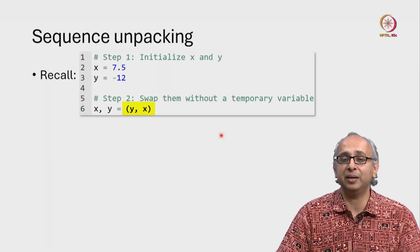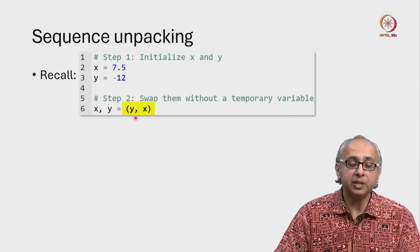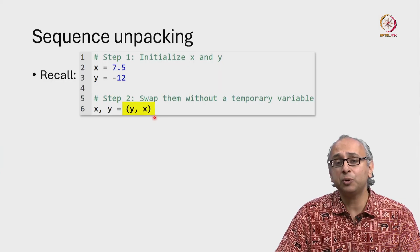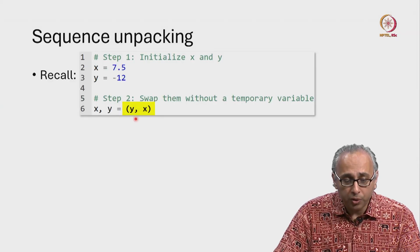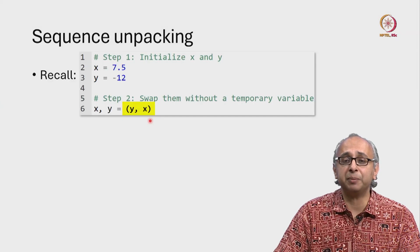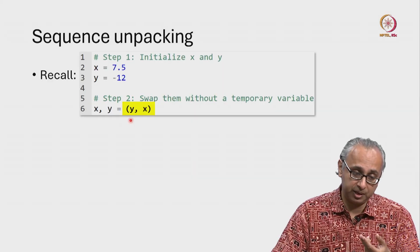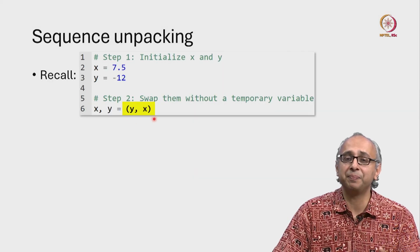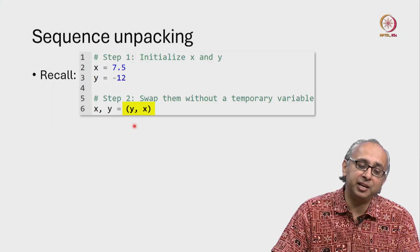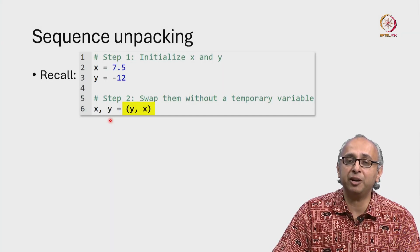but it all happens in one step. So this idea is called sequence unpacking. On the right hand side of an assignment statement, you can put any sequence, for example a tuple, for example a list, and then you can unpack its values into individual variables.